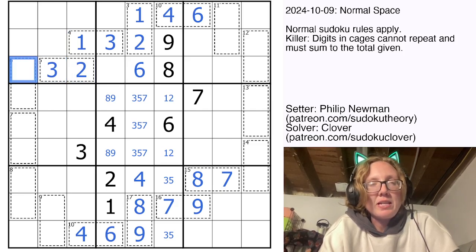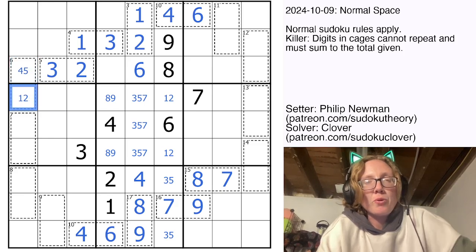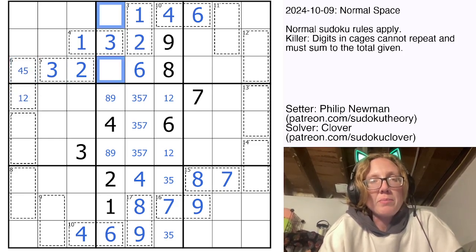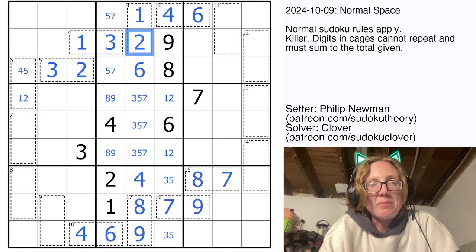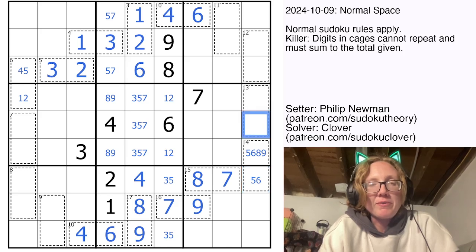Now if we look at the 6 cage, 6 is always either 1 and 5 or 2 and 4. This cell can't contain 1 and 2, so this one can't contain 4 or 5. And I'll mark down these two digits while I am over here. 14 is always going to be 5 and 9, or 6 and 8. This can't be 8 or 9, so this can't be 5 or 6.